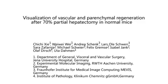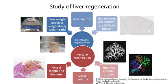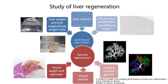Visualization of vascular and parenchymal regeneration after 70% partial hepatectomy in normal mice. Traditionally, liver regeneration is assessed by measuring the increase of liver weight and volume, as well as by determination of the hepatocyte proliferation rate.